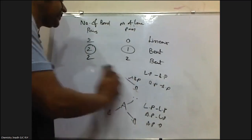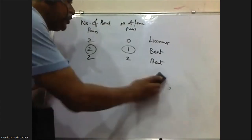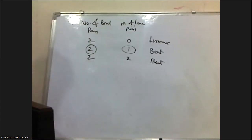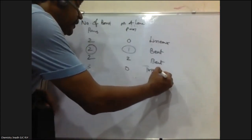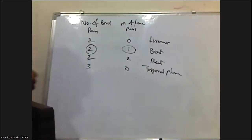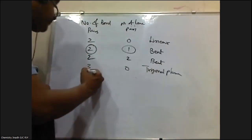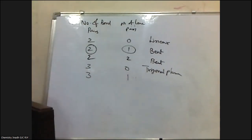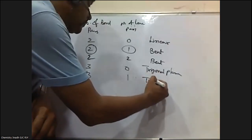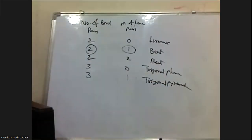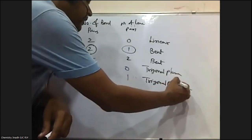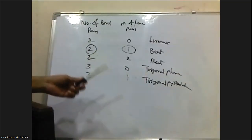The third case: if three bond pairs and zero lone pairs are present, the shape is trigonal planar, as already discussed. If three bond pairs and one lone pair is present, then the shape of the molecule is trigonal pyramidal. The molecule gets a trigonal pyramidal shape.